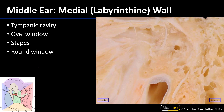Here is another view of the medial wall to reinforce the key structures: the oval window with the footplate of the stapes, the round window inferior to it, the promontory with the tympanic plexus, the tympanic nerve entering, and the lesser petrosal nerve exiting.